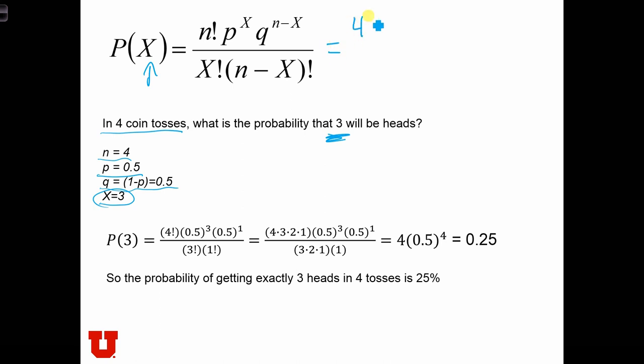So this equals 4 factorial times 1/2 to the third times 1/2, 4 minus 3 to the 1.